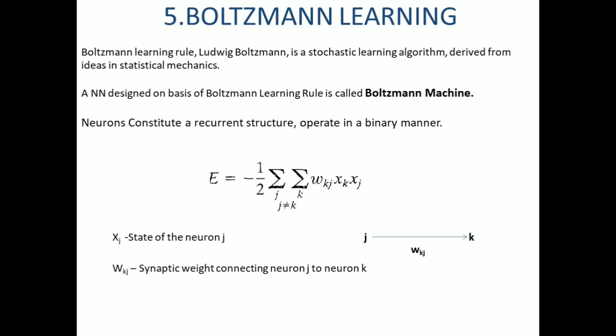Another important point is that in Boltzmann learning, the neurons constitute a recurrent structure with feedback between interconnected neurons, and these neurons operate in a binary manner—either in the on state denoted by plus 1, or in the off state denoted by minus 1.